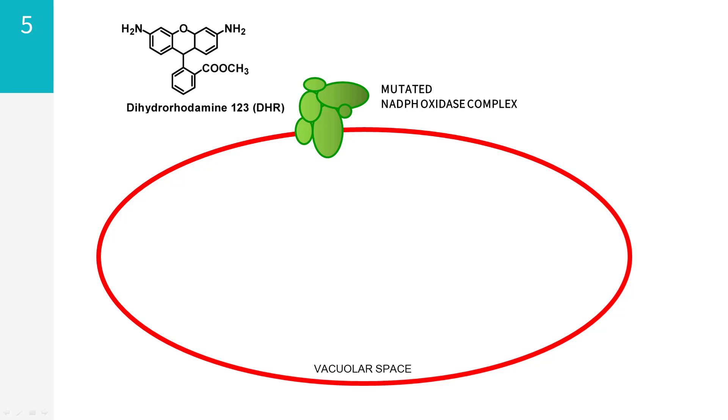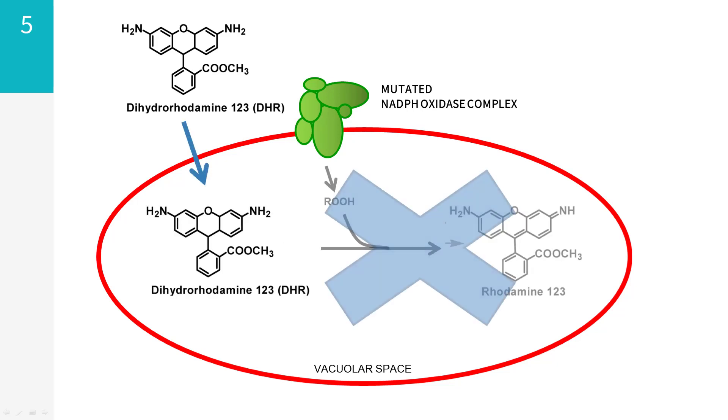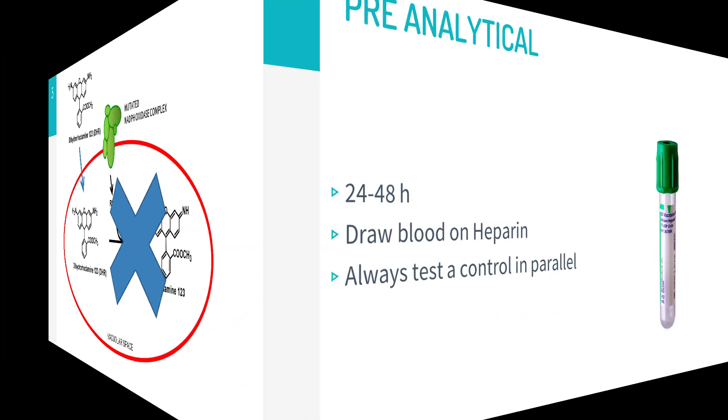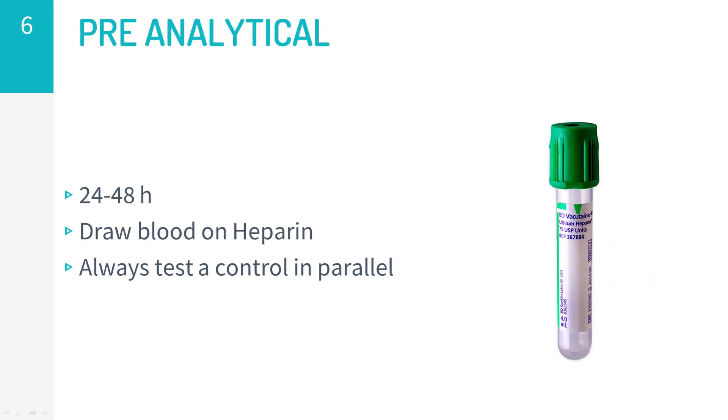In the absence of a functional NADPH oxidase complex, as is the case in CGD, DHR is not converted to rhodamine and does not fluoresce. The DHR test is relatively simple, however important pre-analytical and analytical issues should be kept in mind.